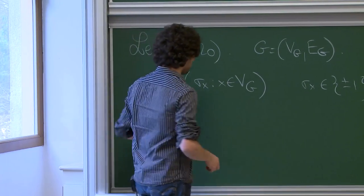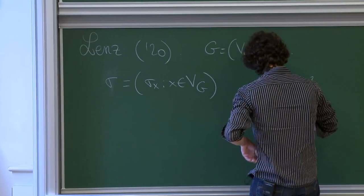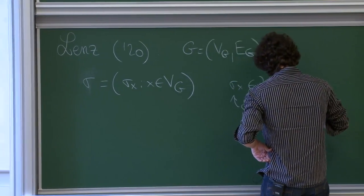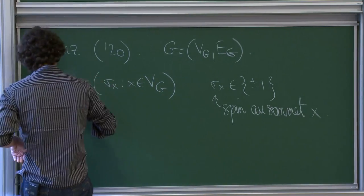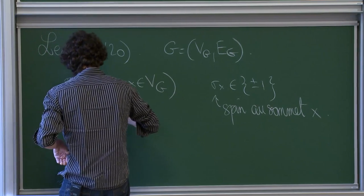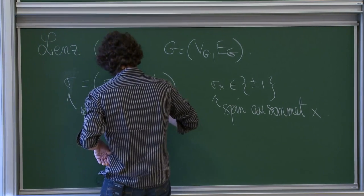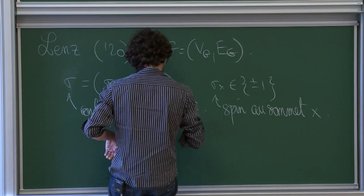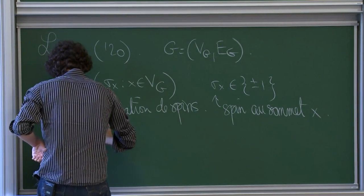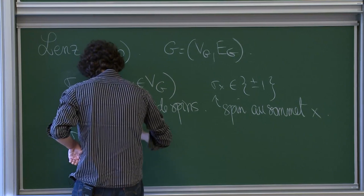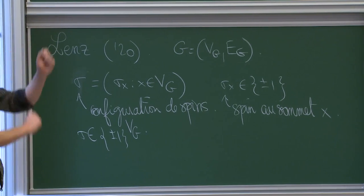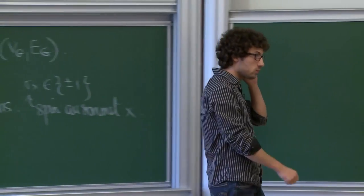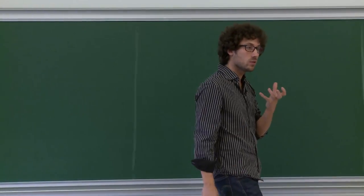σ_x est le spin au sommet x. La configuration σ est un élément de {±1}^{V_G}, c'est ce qu'on imagine être notre aimant dans un certain état, avec des atomes ayant soit un spin +, soit un spin −. Maintenant, je dois définir l'énergie de cet aimant.